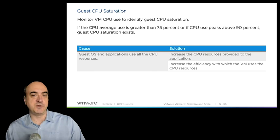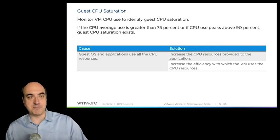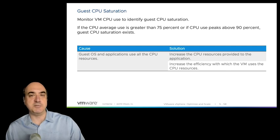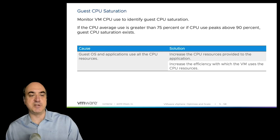If you have guest saturation, that's actually pretty simple because they're VMs. You're looking at CPU utilization for the VM — if it's at 75% and spiking over 90%, then maybe the VM needs more CPUs. That's easy when it's a VM: you can just add virtual CPUs to match the workload requirements. Otherwise, you'll need to increase the efficiency of how the VM uses resources, which means tweaking the workload.